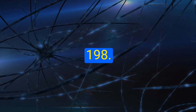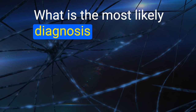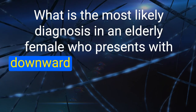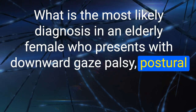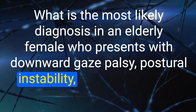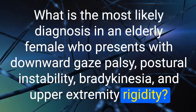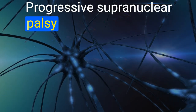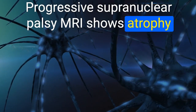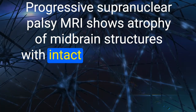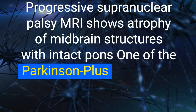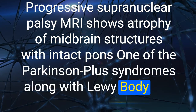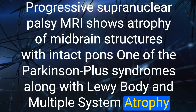198. What is the most likely diagnosis in an elderly female with downward gaze palsy, postural instability, bradykinesia, and upper extremity rigidity? Progressive supranuclear palsy. MRI shows atrophy of midbrain structures with intact pons. One of the Parkinson Plus syndromes, along with Lewy body dementia and multiple system atrophy.